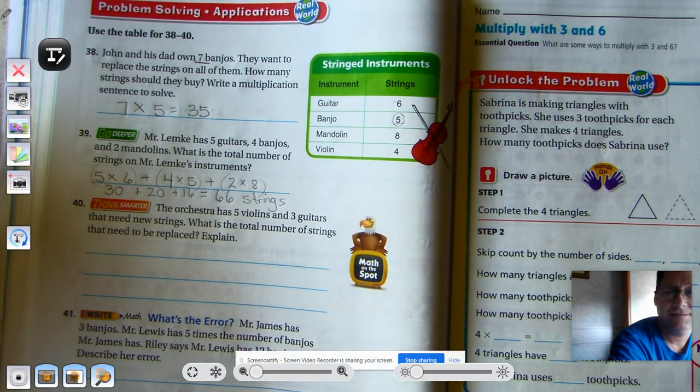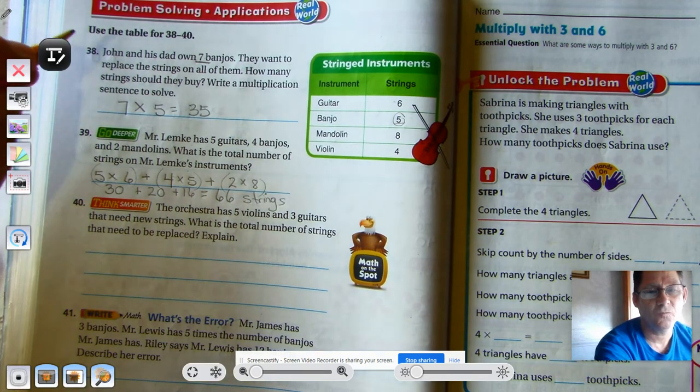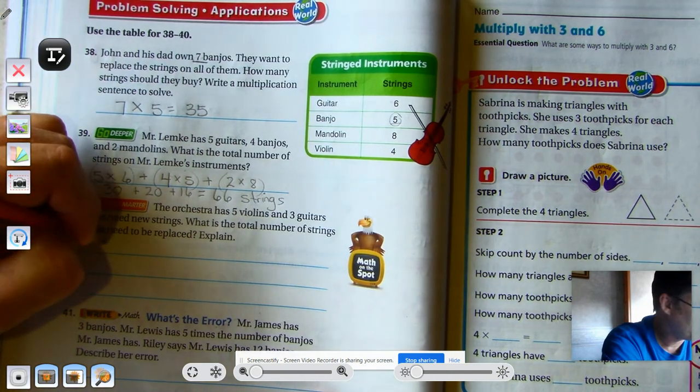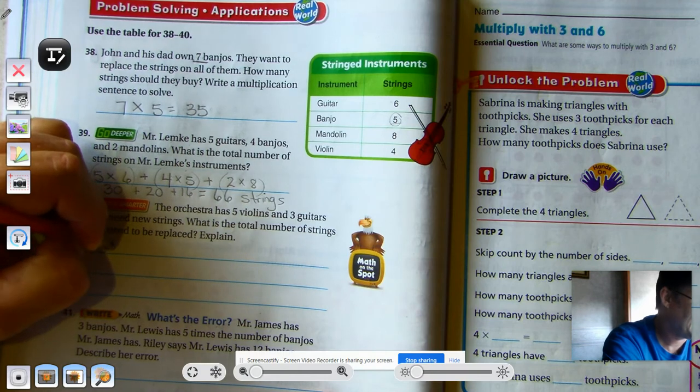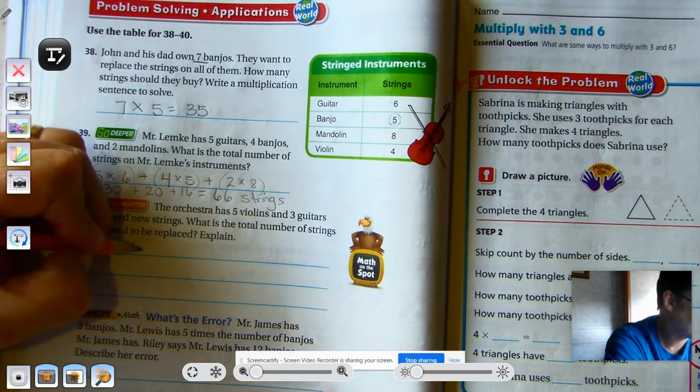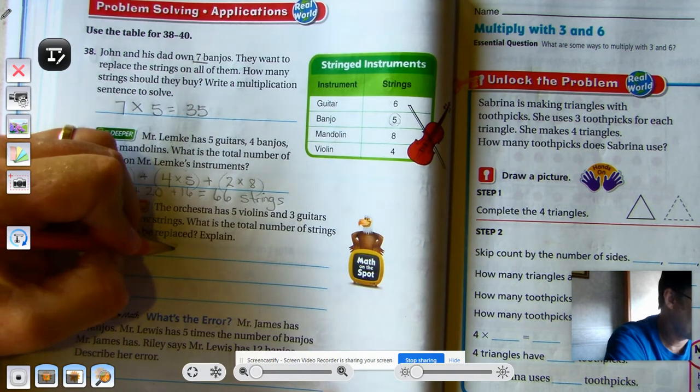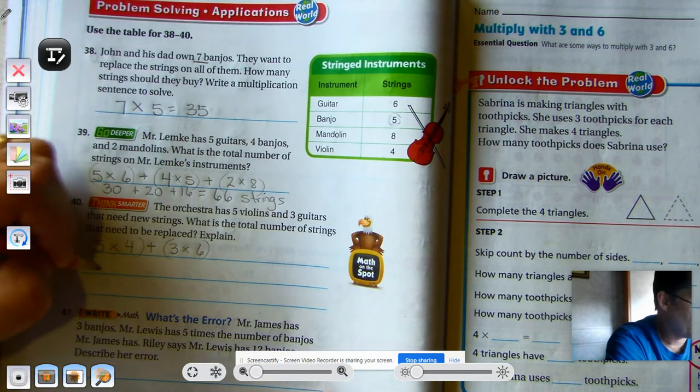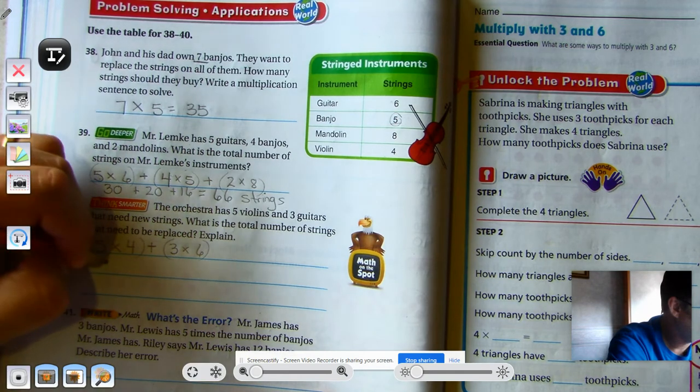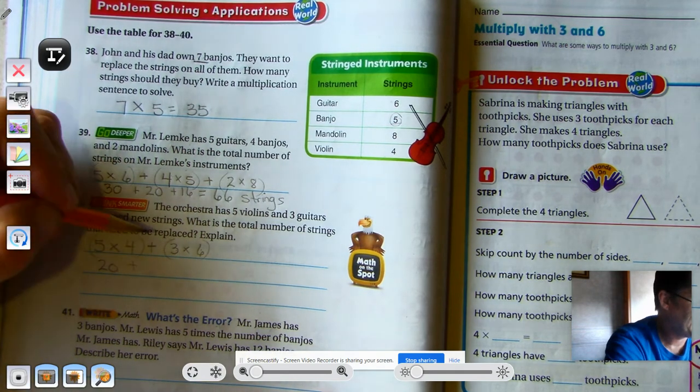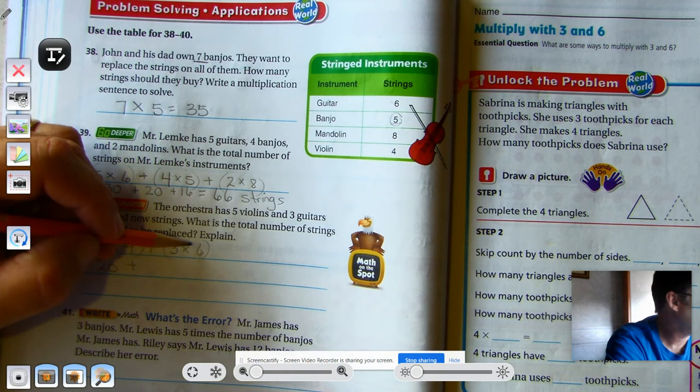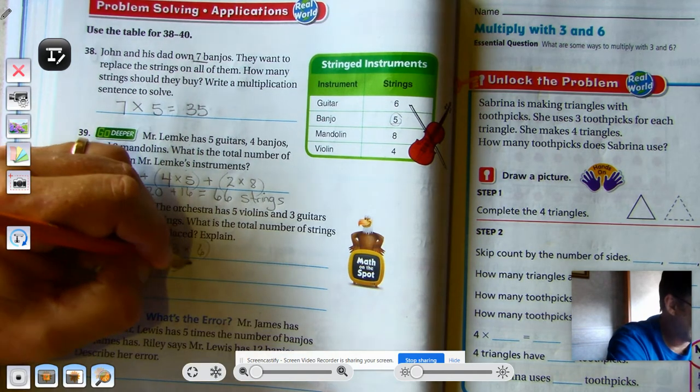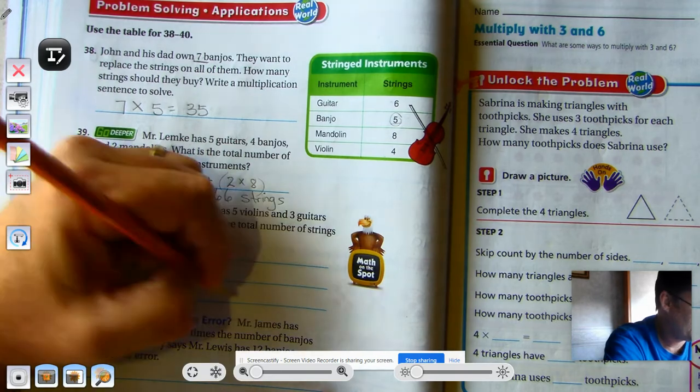The orchestra has 5 violins and 3 guitars that need new strings. What is the total number of strings that need to be replaced? Okay, so again, multiple steps. We have 5 violins, and every violin has 4 strings, plus the 3 guitars that have 6 strings each. So, 4 times 5: 5, 10, 15, 20. Plus 3 times 6. 6 threes is 18, or 3 sixes is 18. So, add those together, we would have 38 strings need to be replaced.